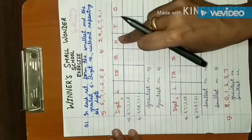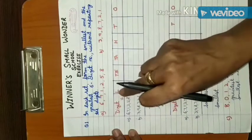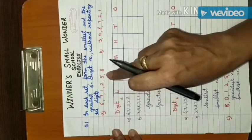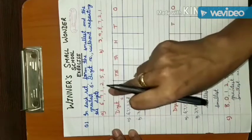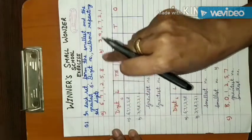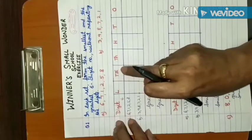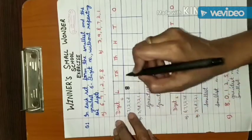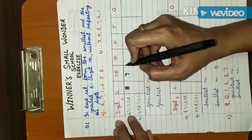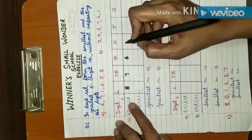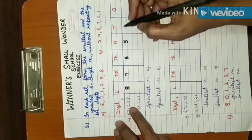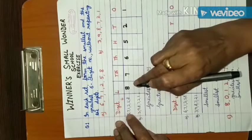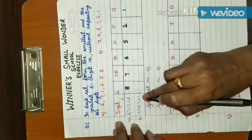First, write the place value chart: 1, 10, 100, 1000, 10,000, and lakhs. To find the greatest number, arrange the digits in descending order from largest to smallest. For the first set, the largest digit is 8, then 7, 6, 5, 2, 1. This is the greatest number for set one.